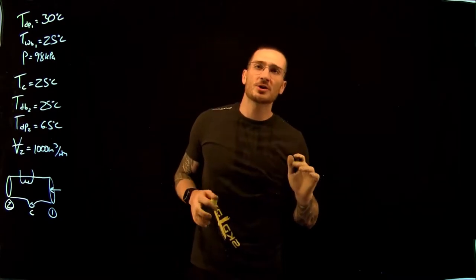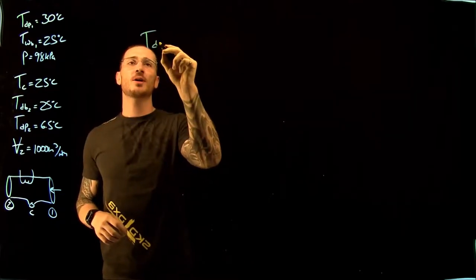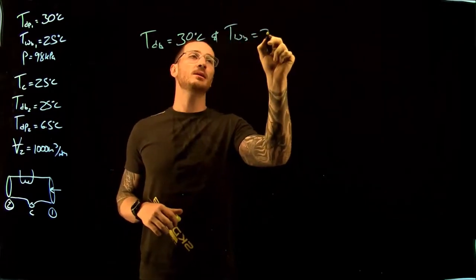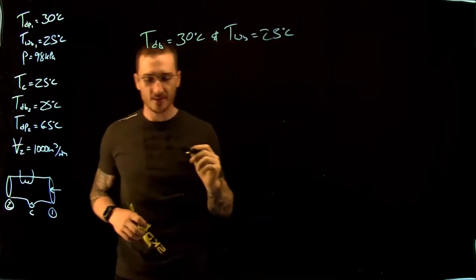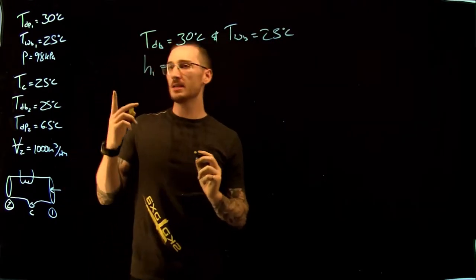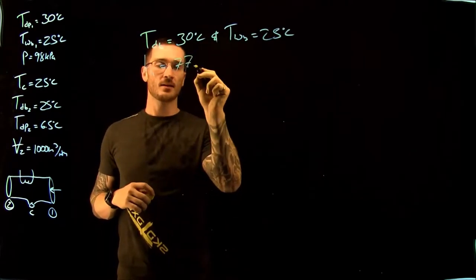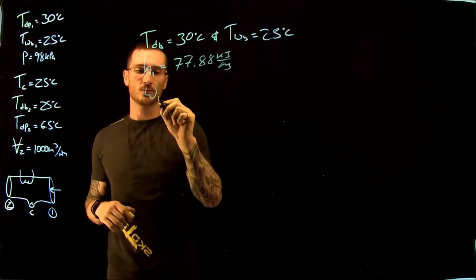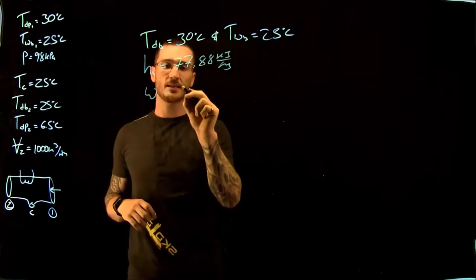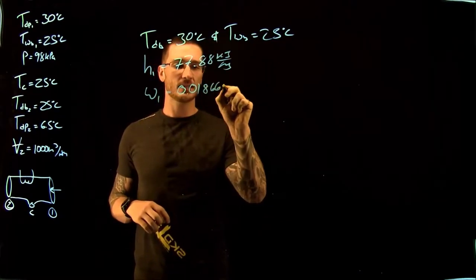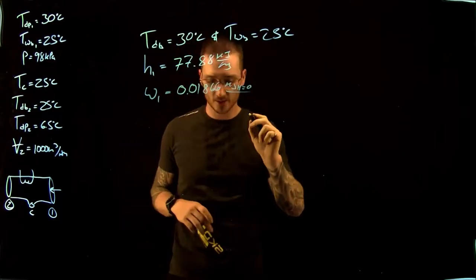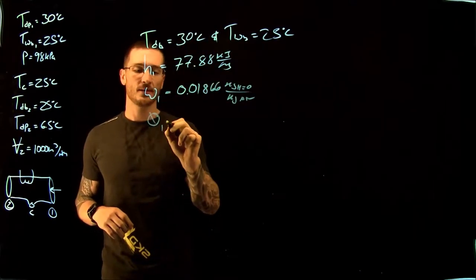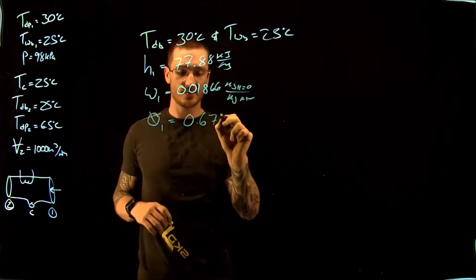From our psychrometric charts, at a dry bulb temperature of 30°C and a wet bulb temperature of 25°C, we can find that enthalpy at point 1 is equal to 77.88 kJ/kg, the specific humidity at point 1 is equal to 0.01866 kg of water per kg of air, and the relative humidity at point 1 is equal to 0.6721.